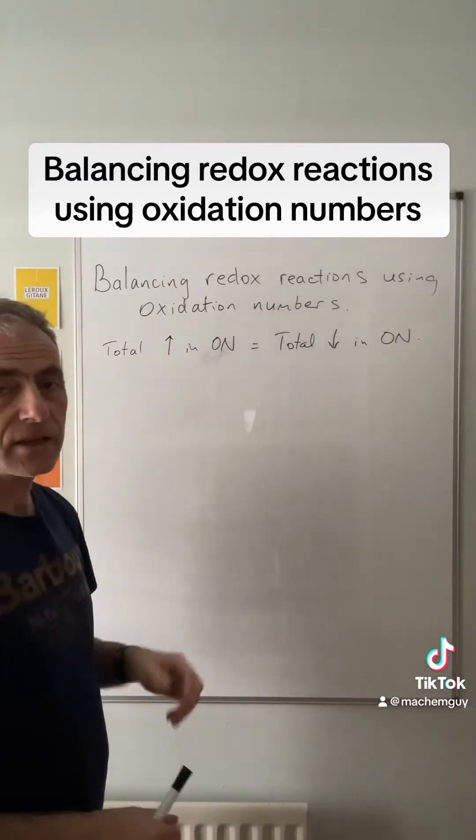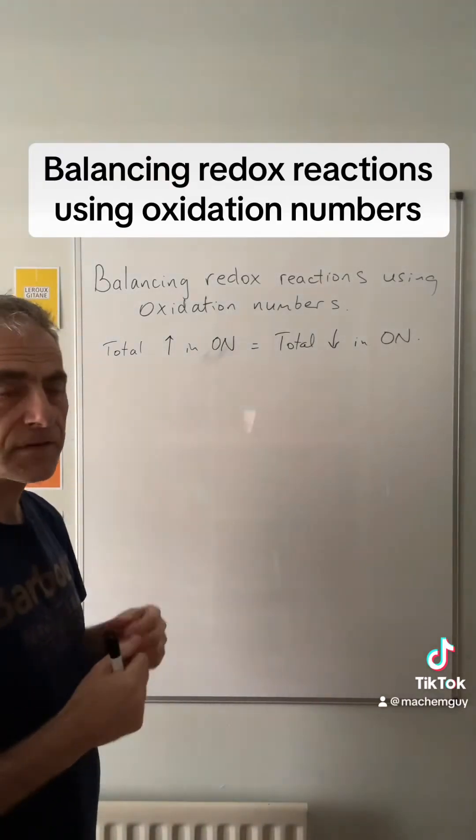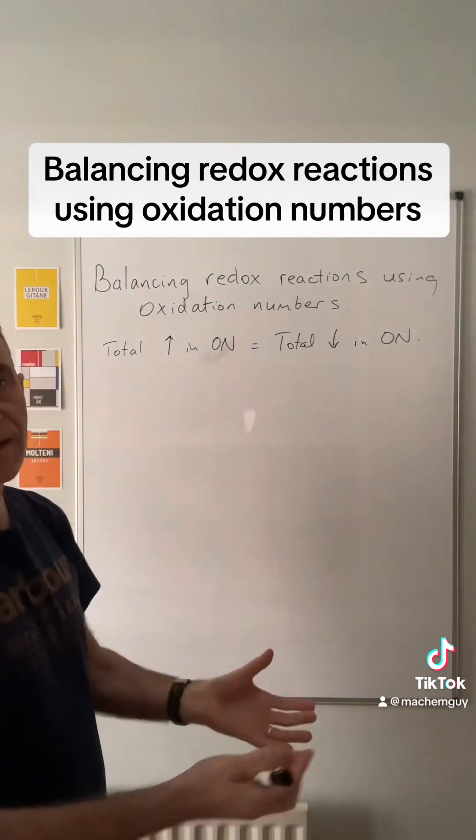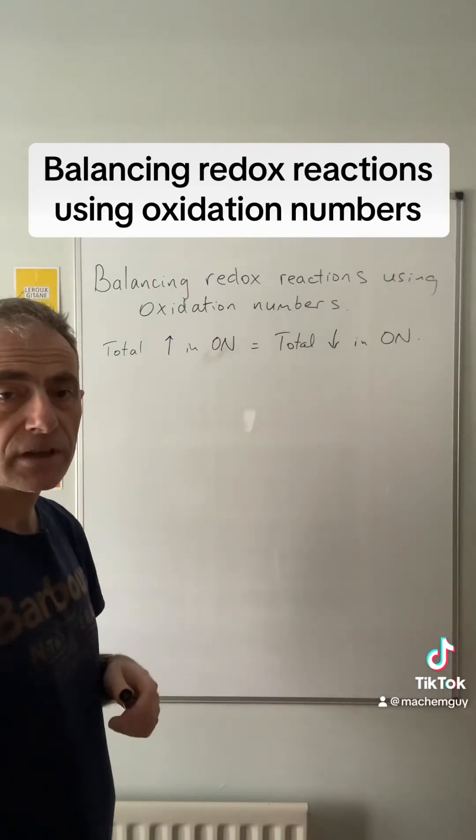That's just down to the fact that if something's given away x number of electrons, something else needs to gain x number of electrons. You can't have electrons unaccounted for in redox reactions.